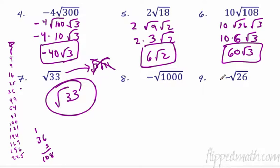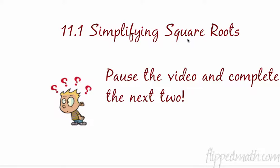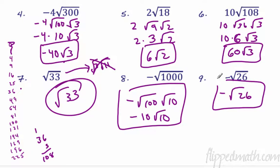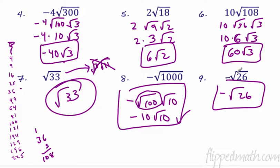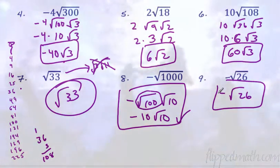Why don't you do the last two all by yourself? Here are the answers. For 1,000: the first perfect square is 100 — 100 times 10. You can check that because there are no other perfect squares that come out of 10, so it's got to be 100. Negative 10 radical 10 is the final answer. For negative square root of 26: check it — nothing goes into 26 as a perfect square factor, so we just keep it the way it is: negative square root of 26.